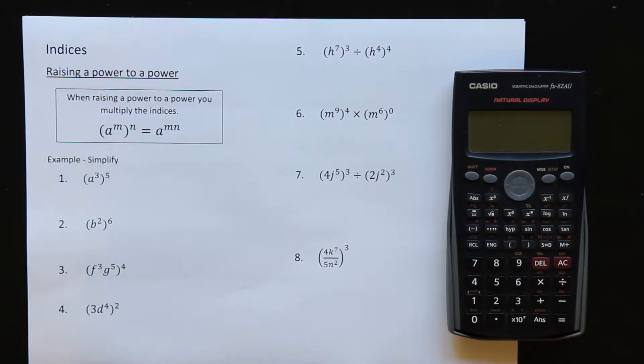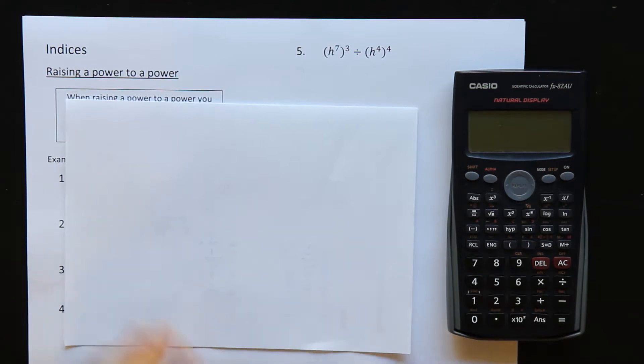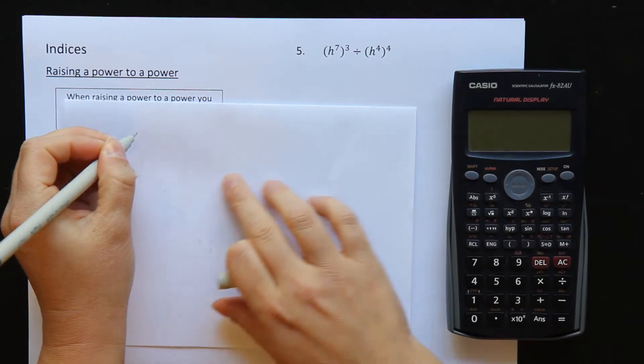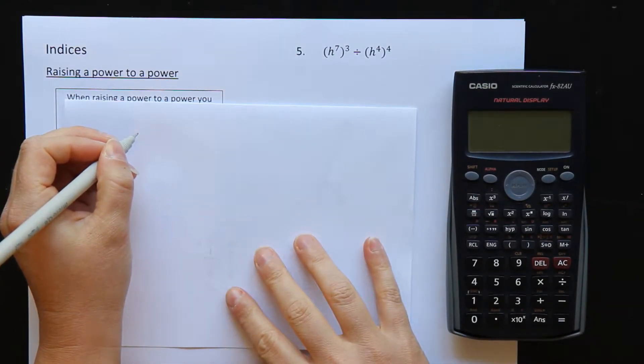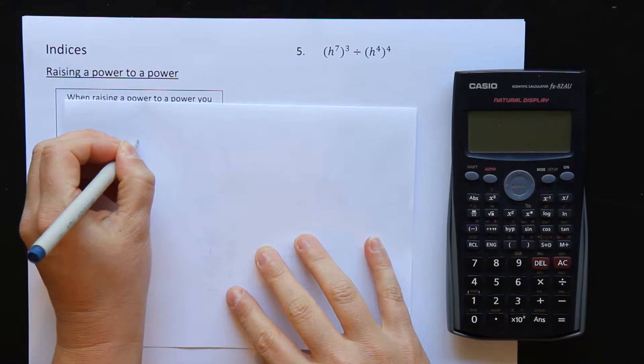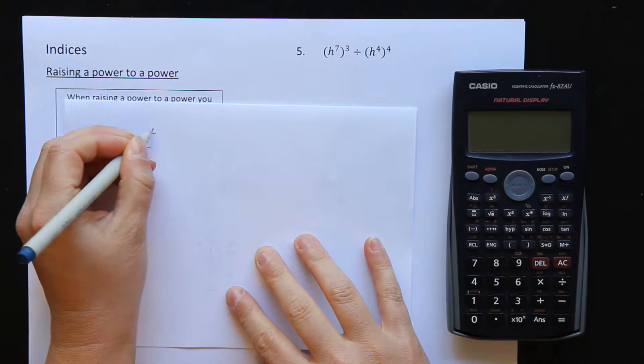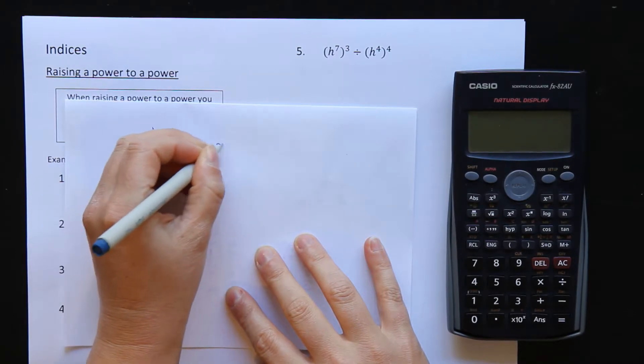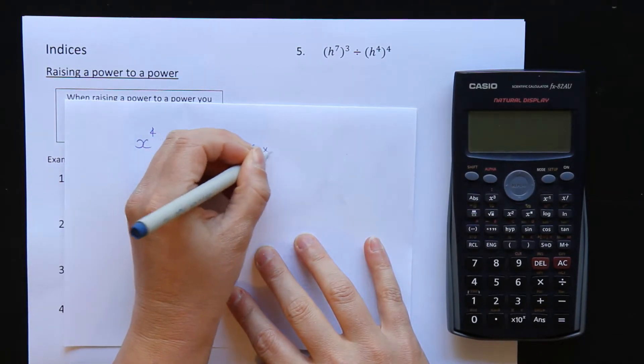Before we start on this sheet, let's just have a look at what we've learnt already. At the very beginning of the topic, we learned how to expand things out from index notation. So if we had something like x to the power of 4, we learned that that was x times x times x times x.